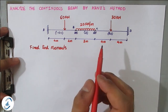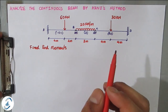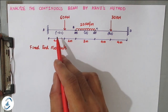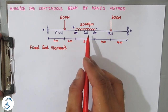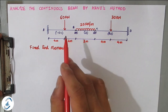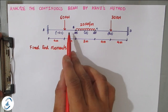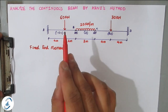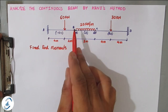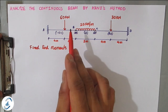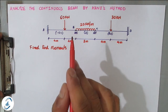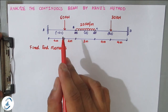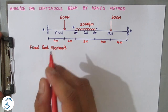Here E and I values are not given, so we are not going to consider E·I numerically, but the I value is changing for each span. Span AB has 1.5I, BC has 1I, and CD has 2I. For span AB the point load is not at the center, so the fixed end moment formula will be: MF_AB = W·a·b²/L² and MF_BA = W·a²·b/L². These formulas have been detailed in both previous methods.